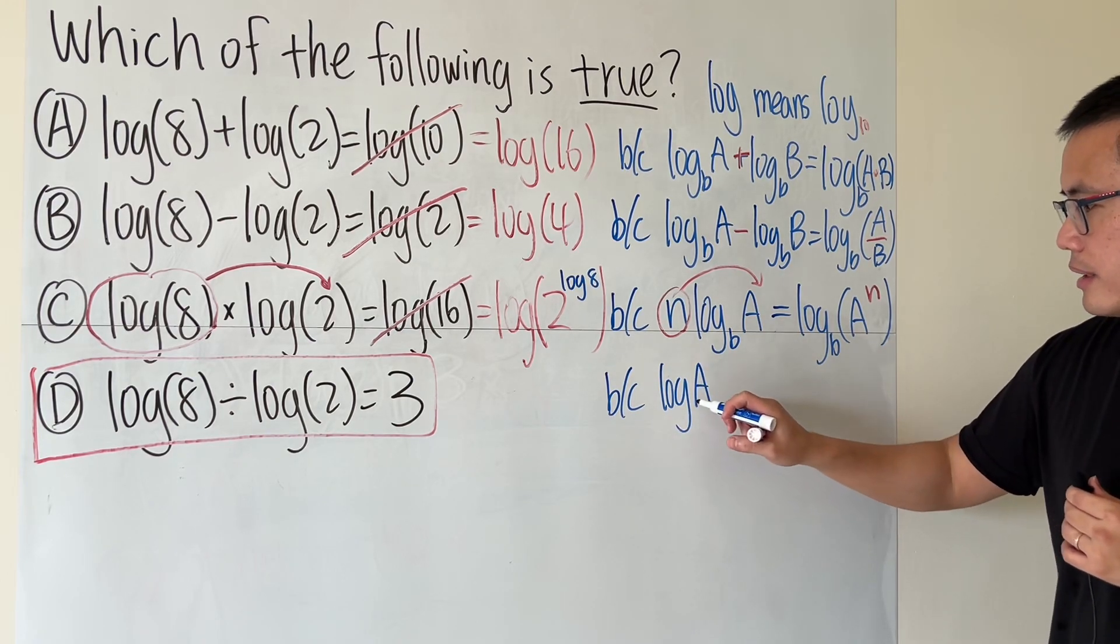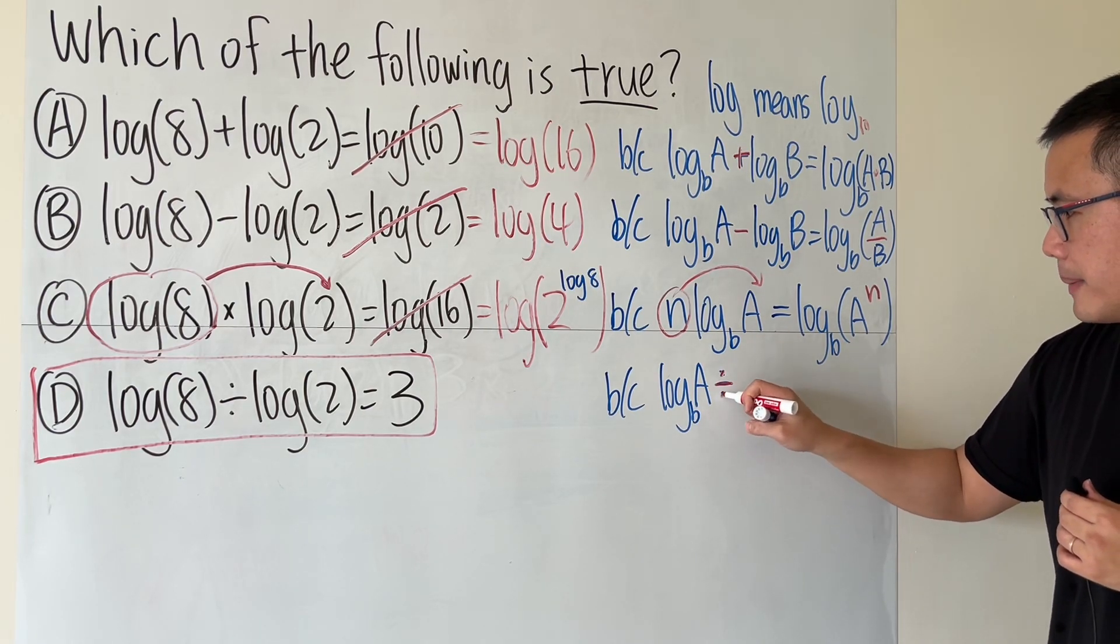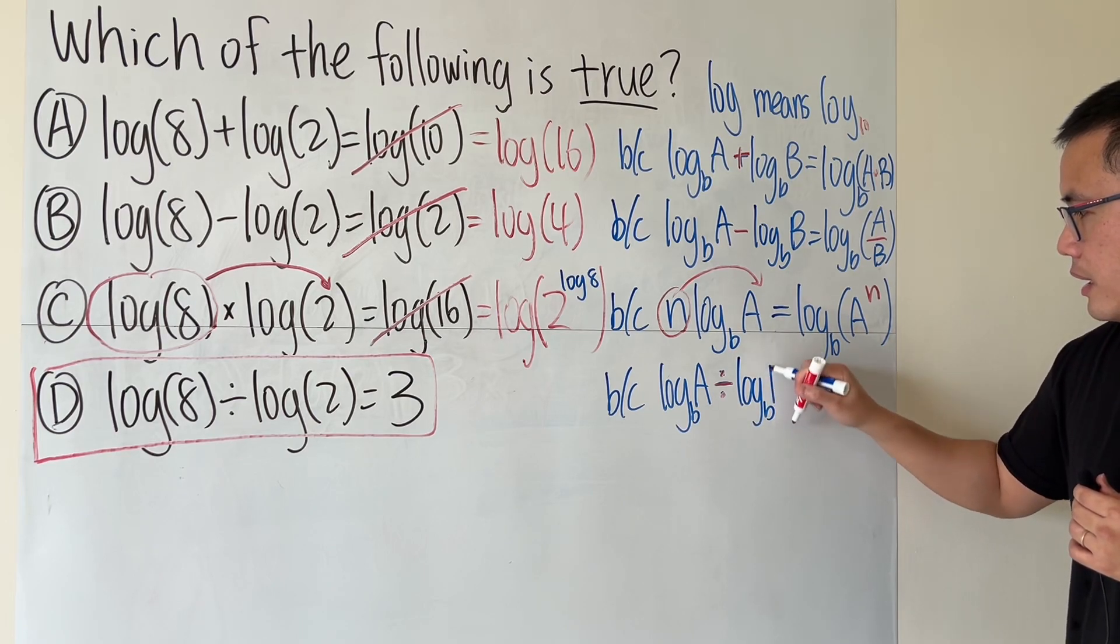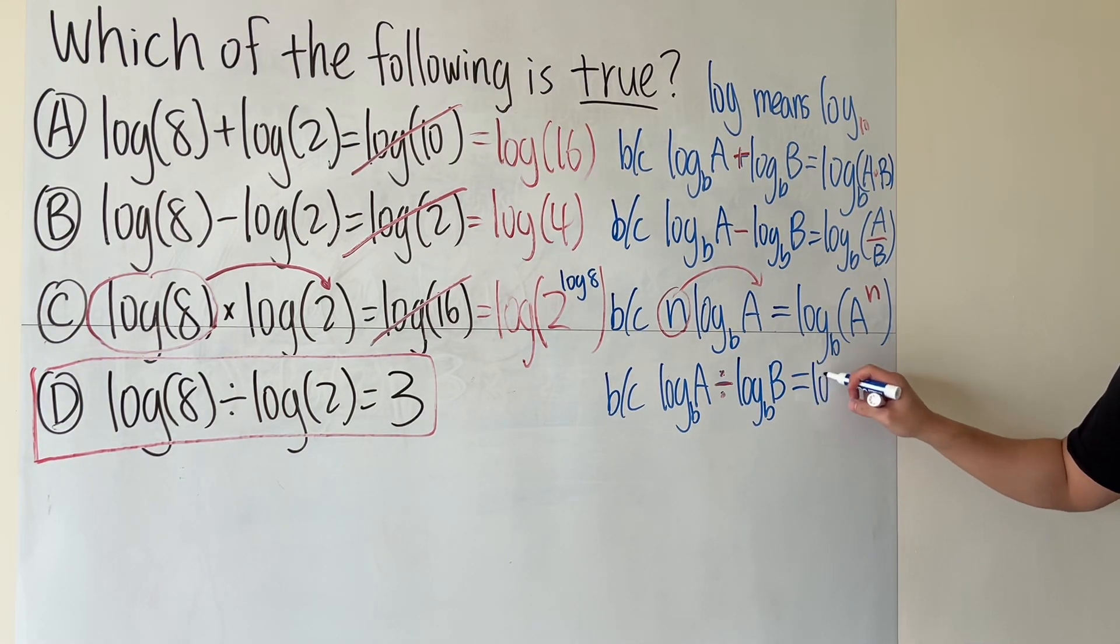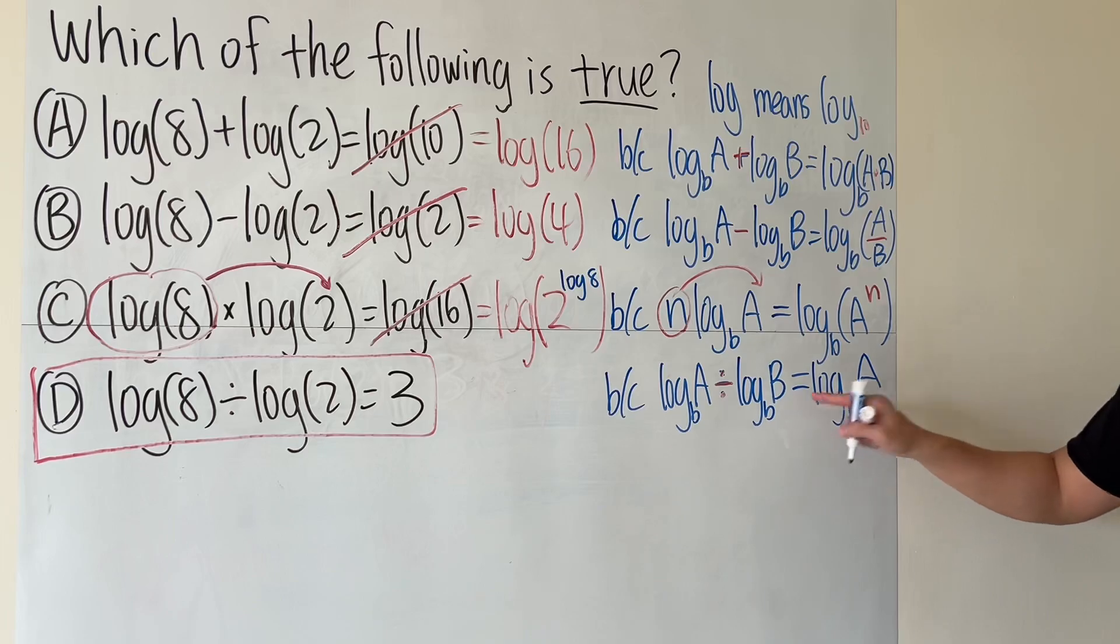If we have log base b of a, same base, divided by log base b of c, this equals log where this c goes inside and this b becomes the base. Keep in mind this b is right here now.